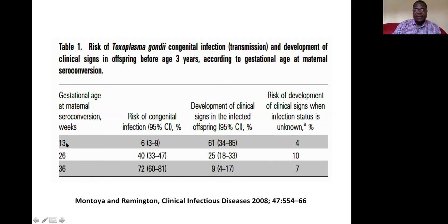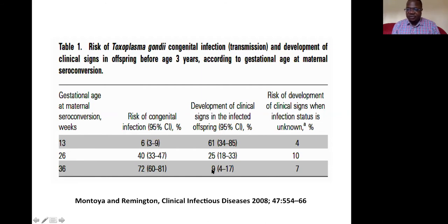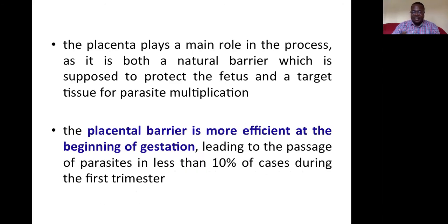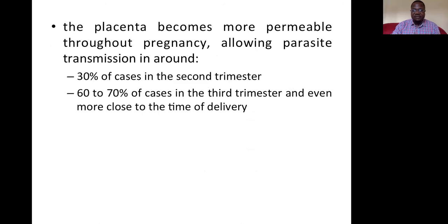If you are exposed to the parasite early in pregnancy, there is a high chance your baby will be born with many clinical manifestations because the fetus is exposed for a very long time. In contrast, if the mother is exposed late in pregnancy, most babies will be born asymptomatic. The placenta thus acts both as a natural barrier protecting the fetus and as a target tissue for parasite multiplication, becoming more permeable throughout pregnancy.